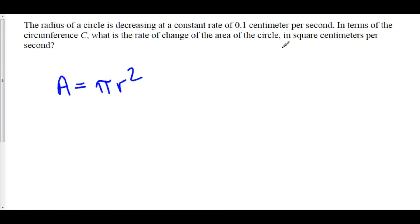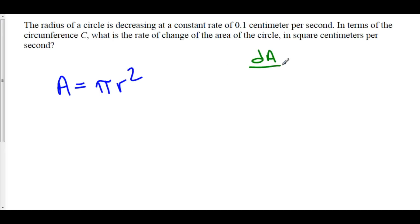This area is changing over time. That's why its derivative is in terms of square centimeters — that's the area — per second, that's the dt down below. So really what we're solving for is dA/dt, the derivative of area with respect to time t. We're going to treat all of our variables as functions of time. As this circle decreases, our area also decreases, and likewise our radius decreases over time. So area really is a function of time.